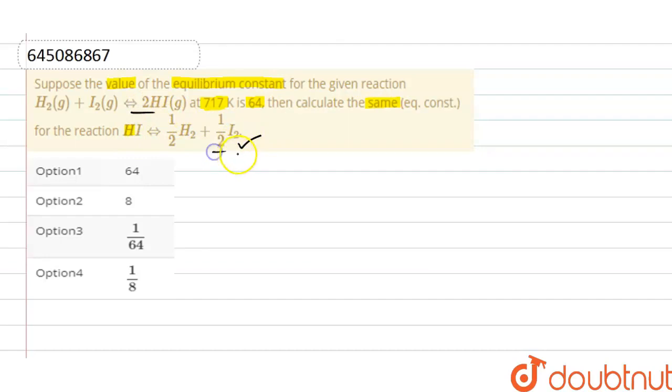This is our first reaction and this is our second reaction. So first is H₂ plus I₂, it will give rise to 2HI. And the second reaction is HI, it will give rise to half H₂ plus half I₂.